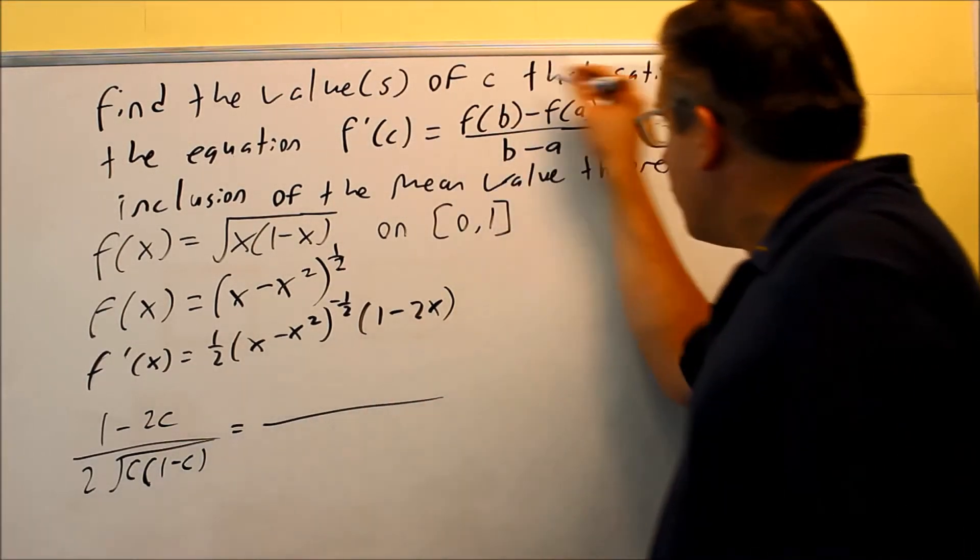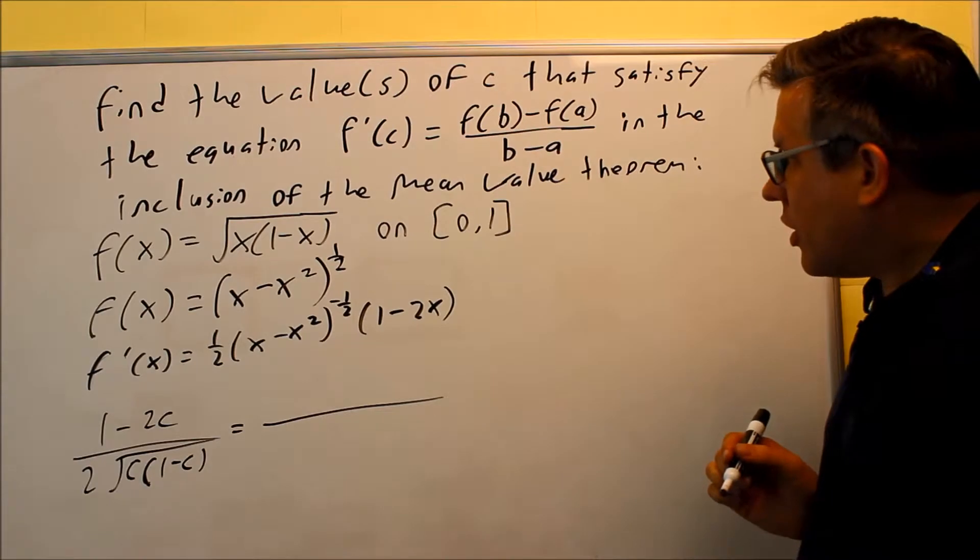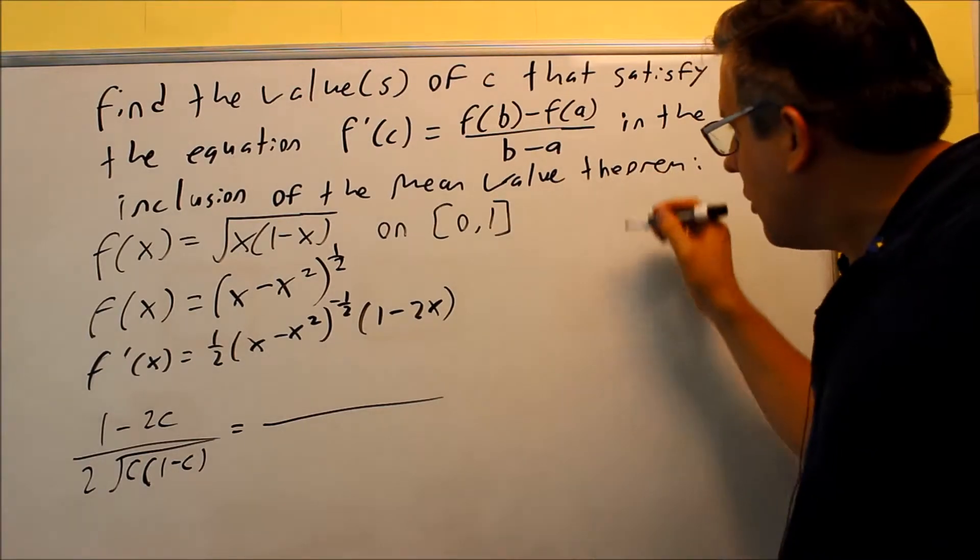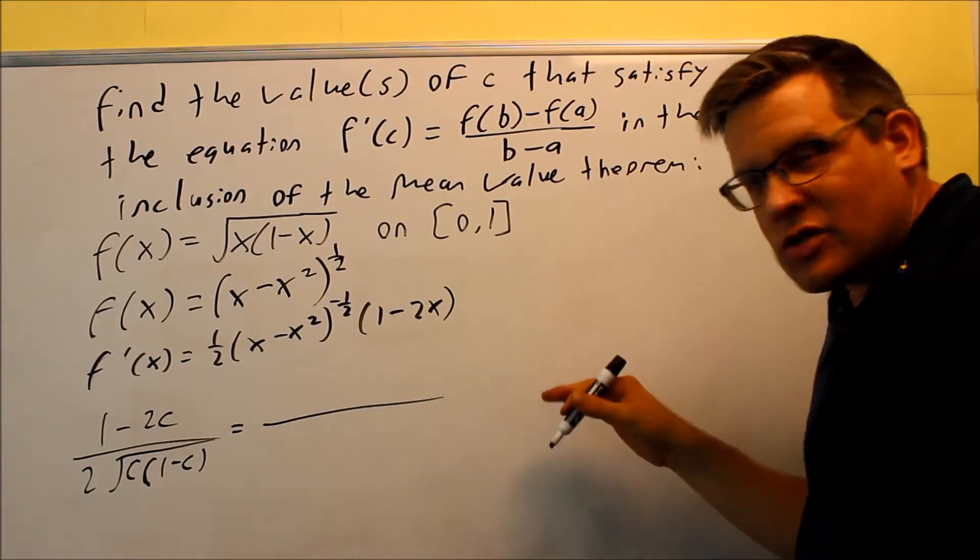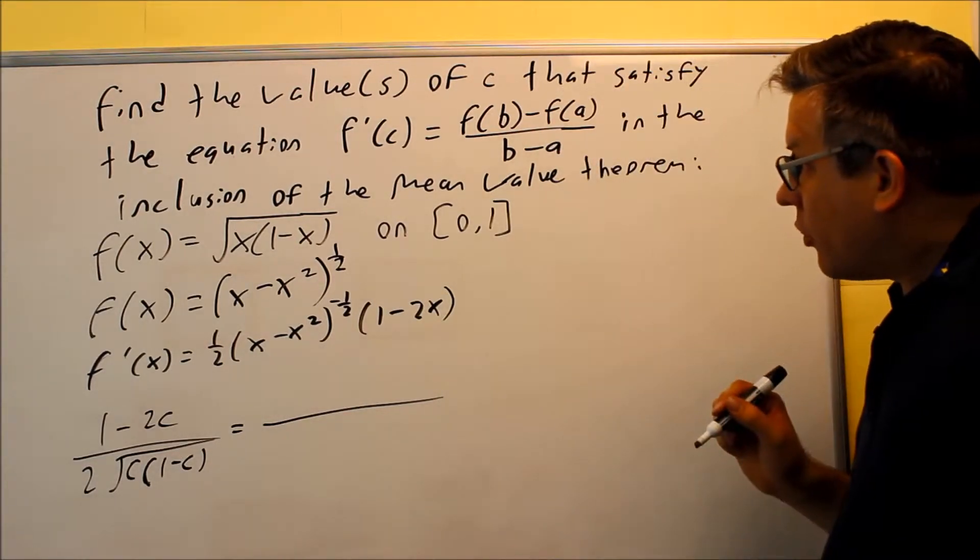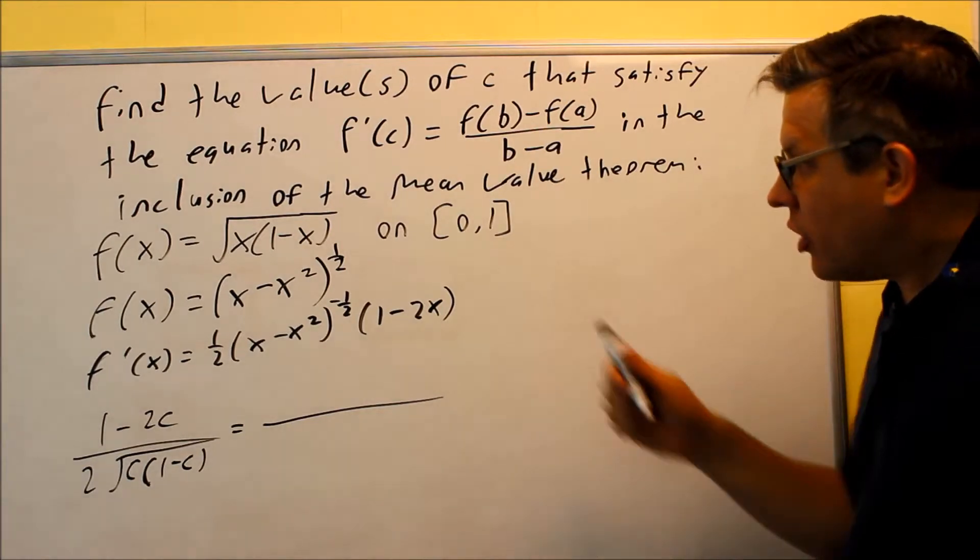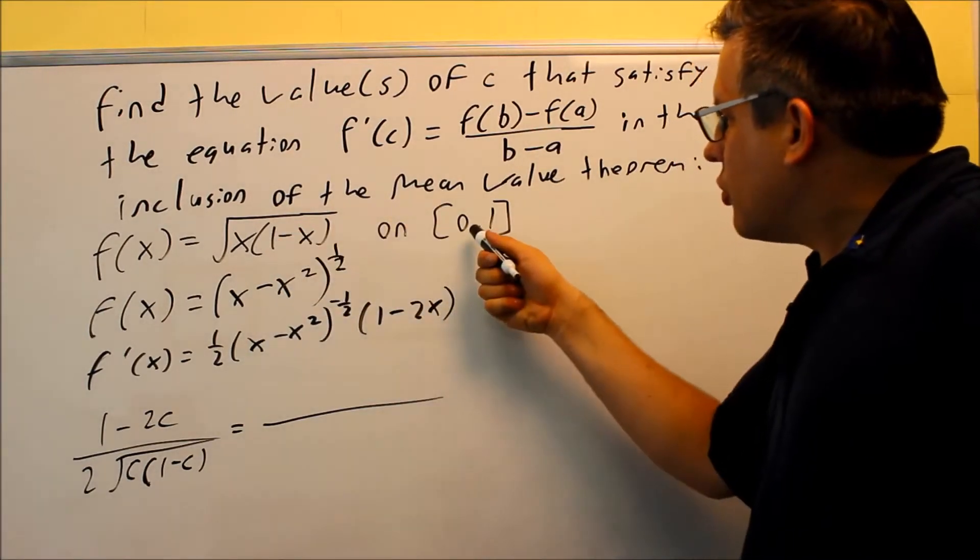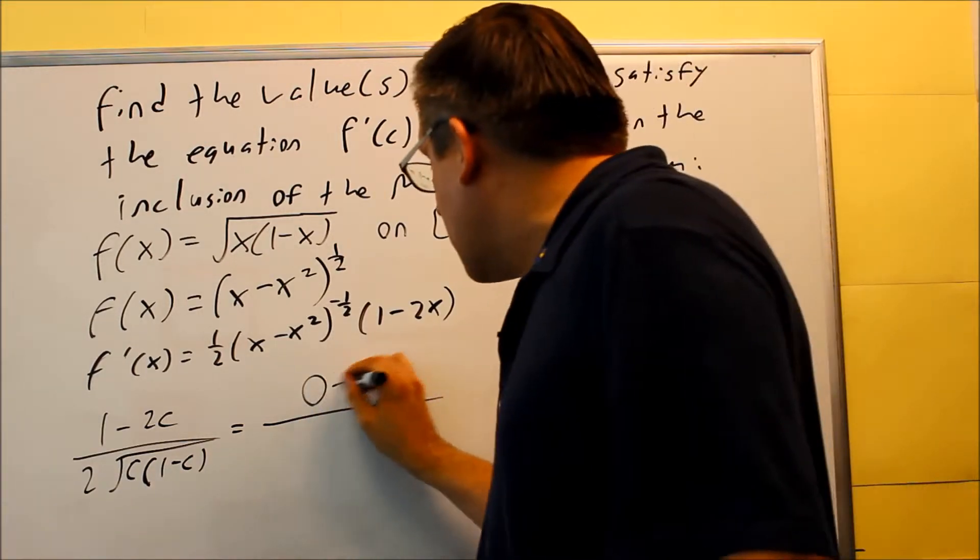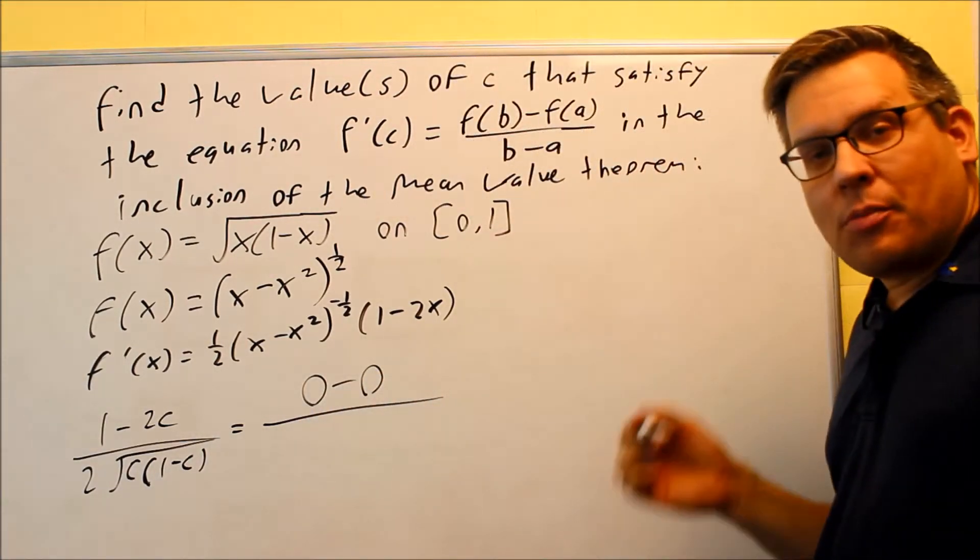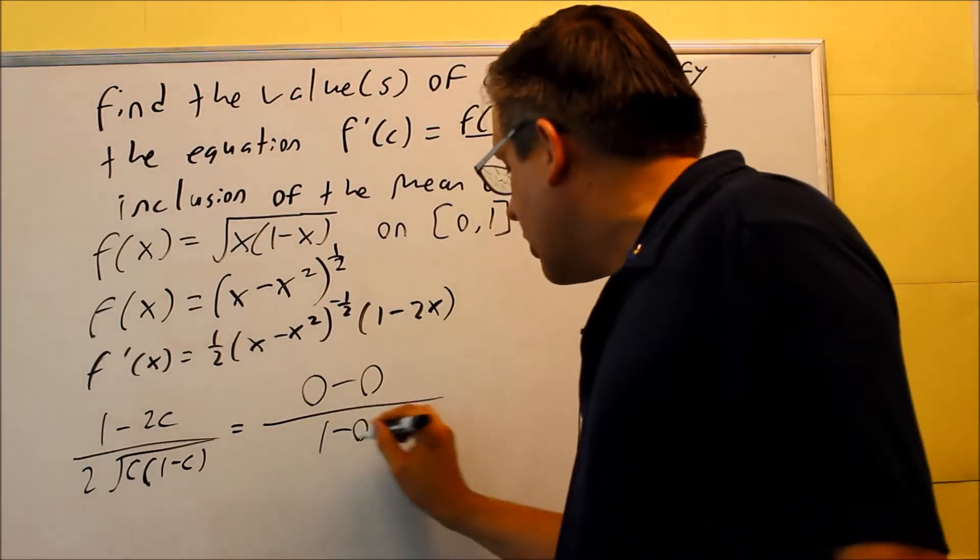On the right hand side, we're doing this calculation right here. f of b and f of a, well actually, we don't even need to write that on the side. We already talked about those already. We know that f of b and f of a are both going to be 0. We're using the original function, 0 and 1, we're just going to get 0 for that. So I get 0 minus 0 across the top, on the bottom I have b minus a, 1 minus 0.